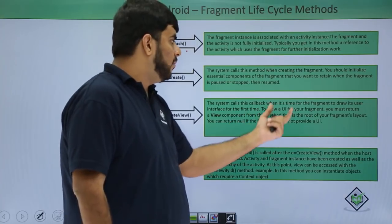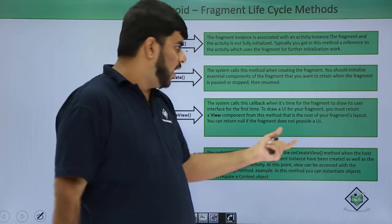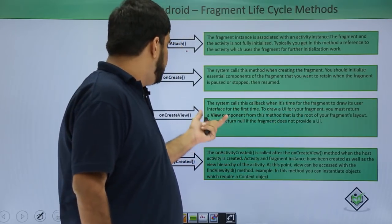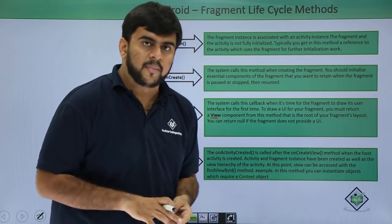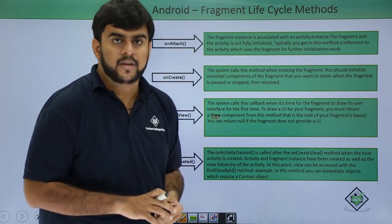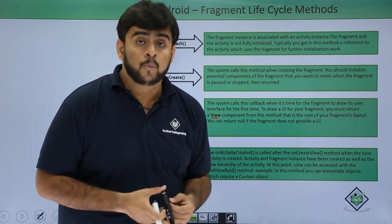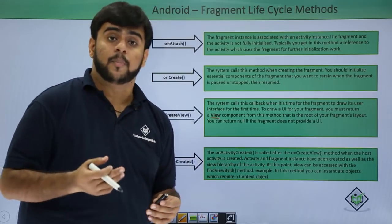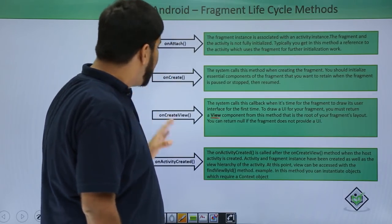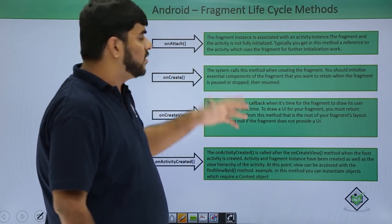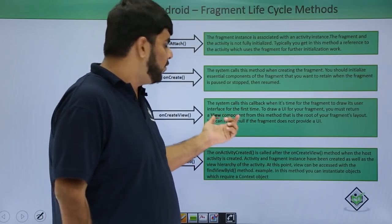Then it is on-create-view. This is the callback when the user interface is being called for the first time — we draw the UI by returning the view component. This function has three parameters: first being the layout inflater, second being the parent ViewGroup, and the last being a boolean indicating whether this fragment is linked to the parent. It returns a view. If there is no UI for the fragment and only background work, you return null.